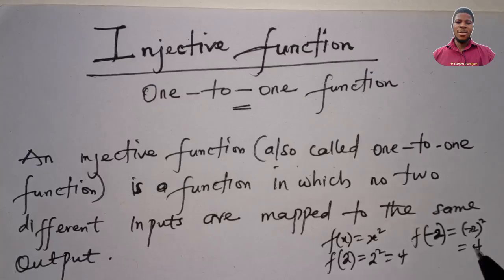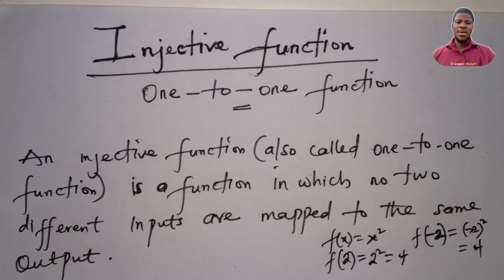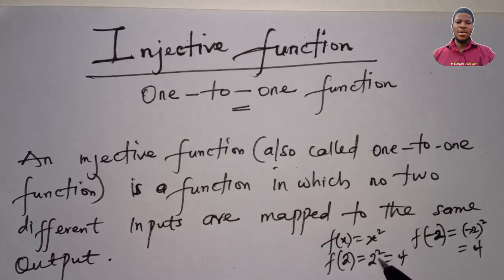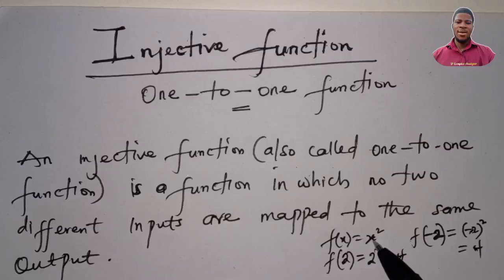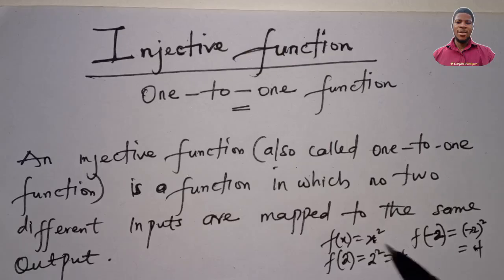So this function is not injective over the reals, because two different input values produce the same output. A function is injective if one input value gives a distinct output value. We will see later that f(x) = x² can be injective, but there will be a restriction on the domain.